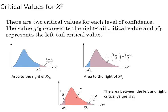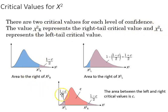As we build a confidence interval for variance or standard deviation using the chi-square distribution, as with the z and t distributions, we need to find a left and a right cutoff value. There are two critical values for each level of confidence — chi-square R for the right and chi-square L for the left — as shown in these graphs. The area in between is the confidence level c.